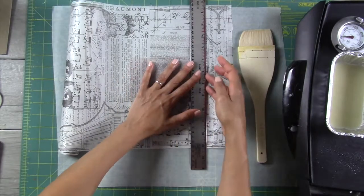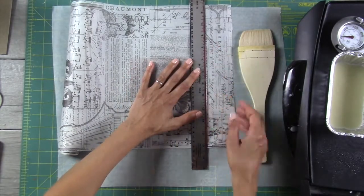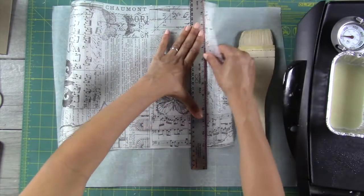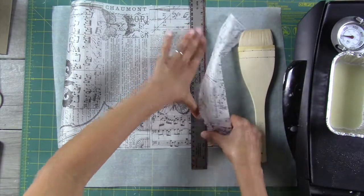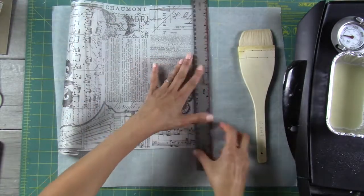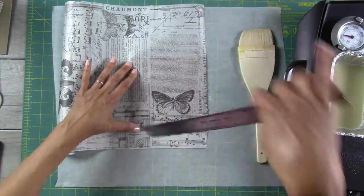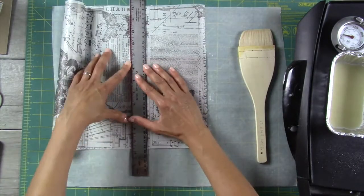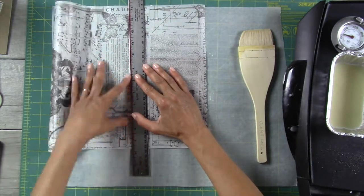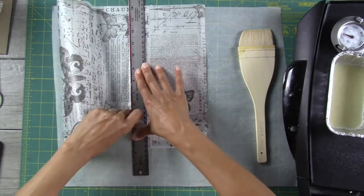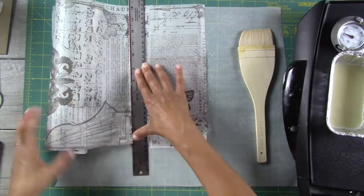In this case I am using some printed tissue paper. I place the paper on top of the surface and gently press it down. Then I use my straight edge to help me tear the edges rather than cut them so that I get a nice soft effect.